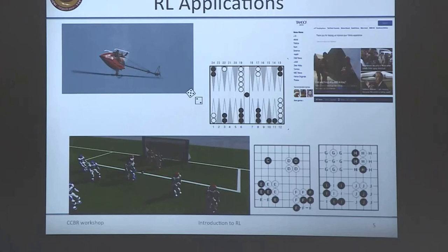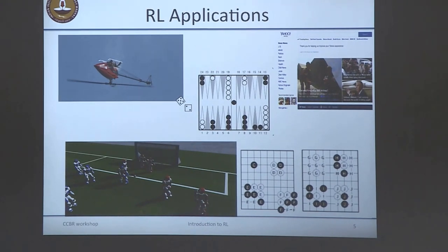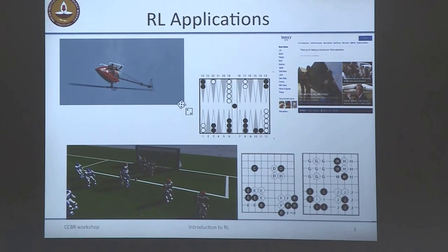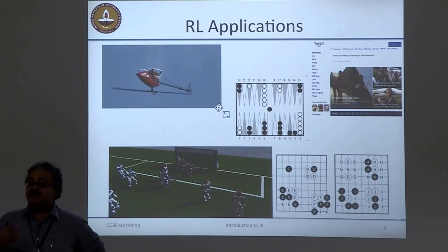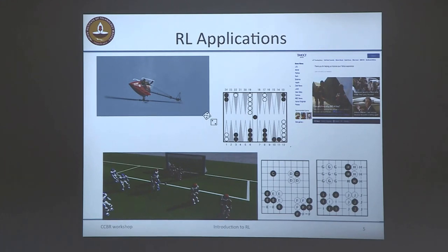Apart from psychology and neuroscience, RL also has many practical applications. For example, that picture is actually a helicopter flying upside down — you can train an RL agent to do trick maneuvers with helicopters, something very hard for humans. Backgammon was another example: at some point the world's most powerful backgammon player was an RL agent. And we can arguably make that claim for the game of Go now — it beat one player, Lee Sedol.